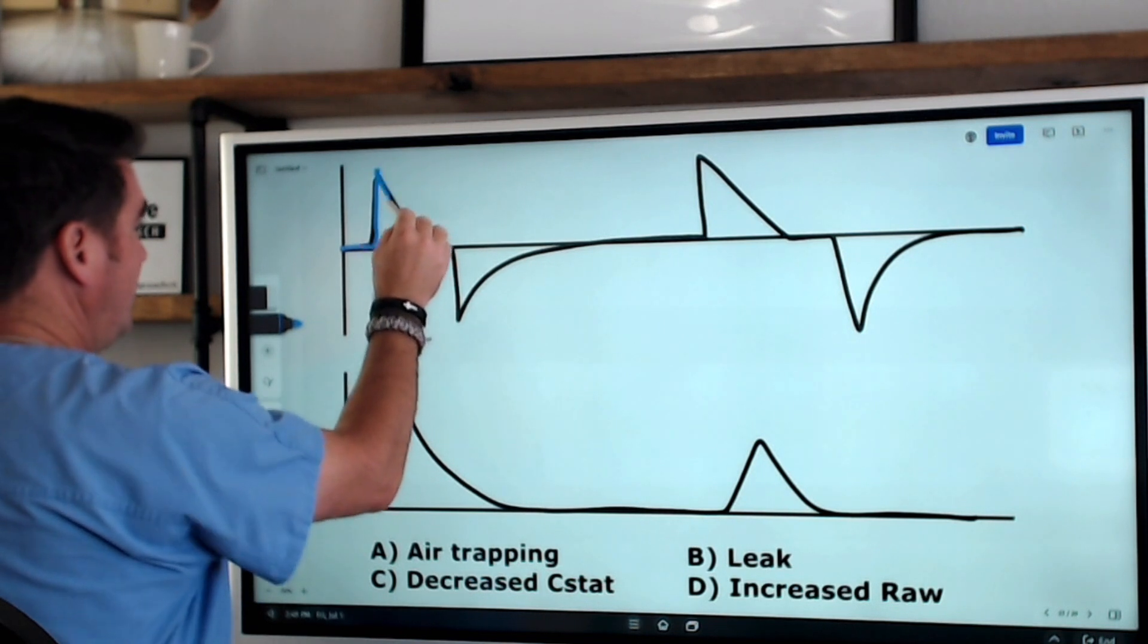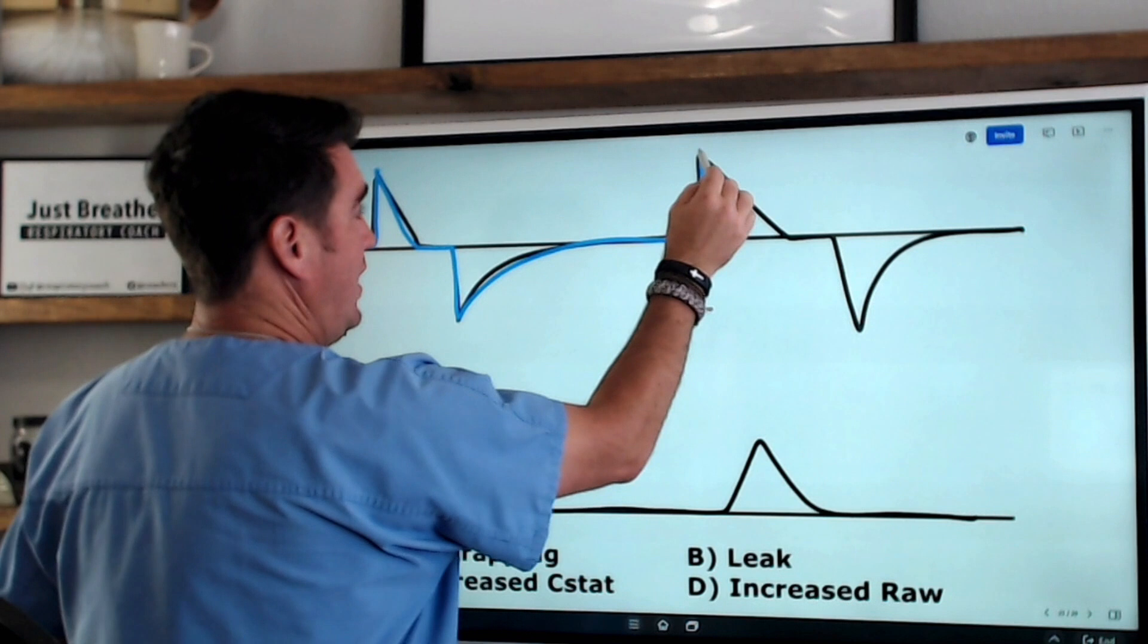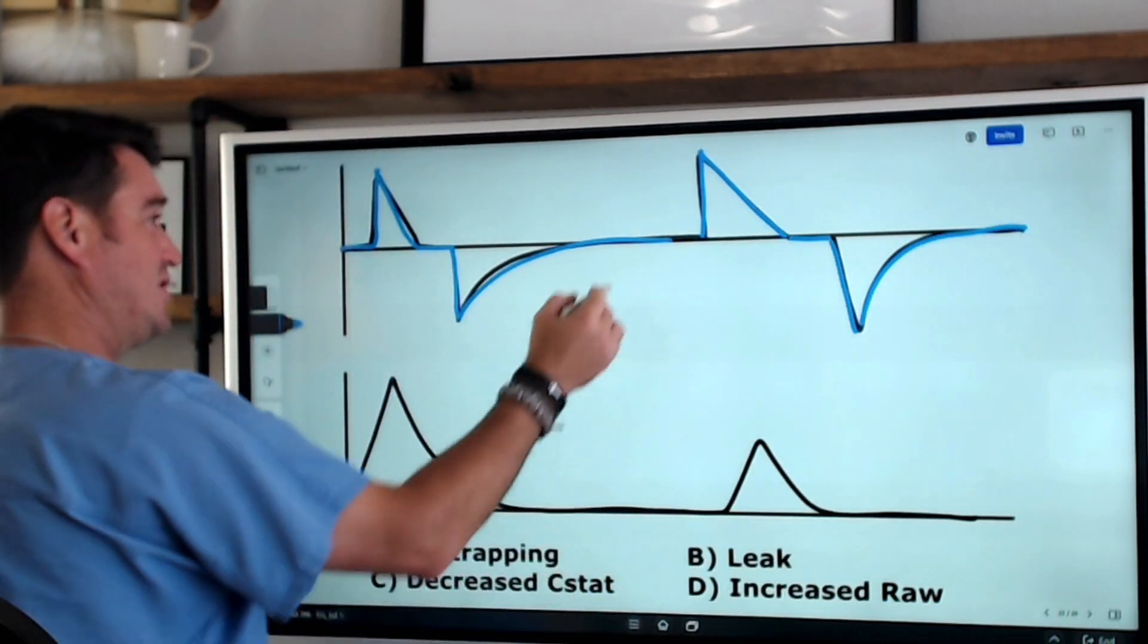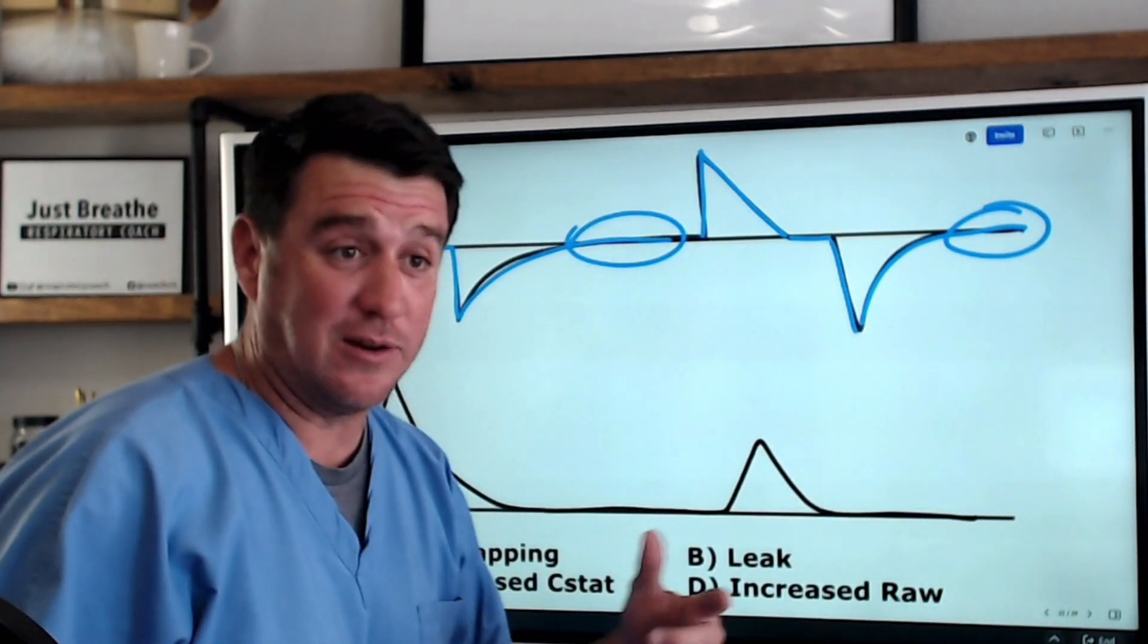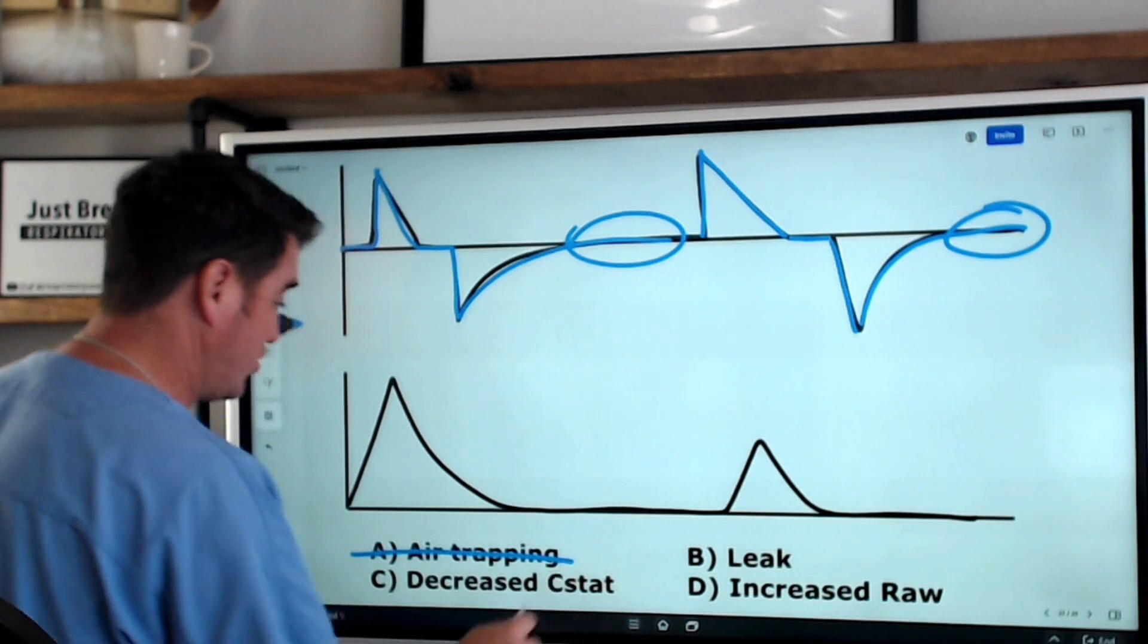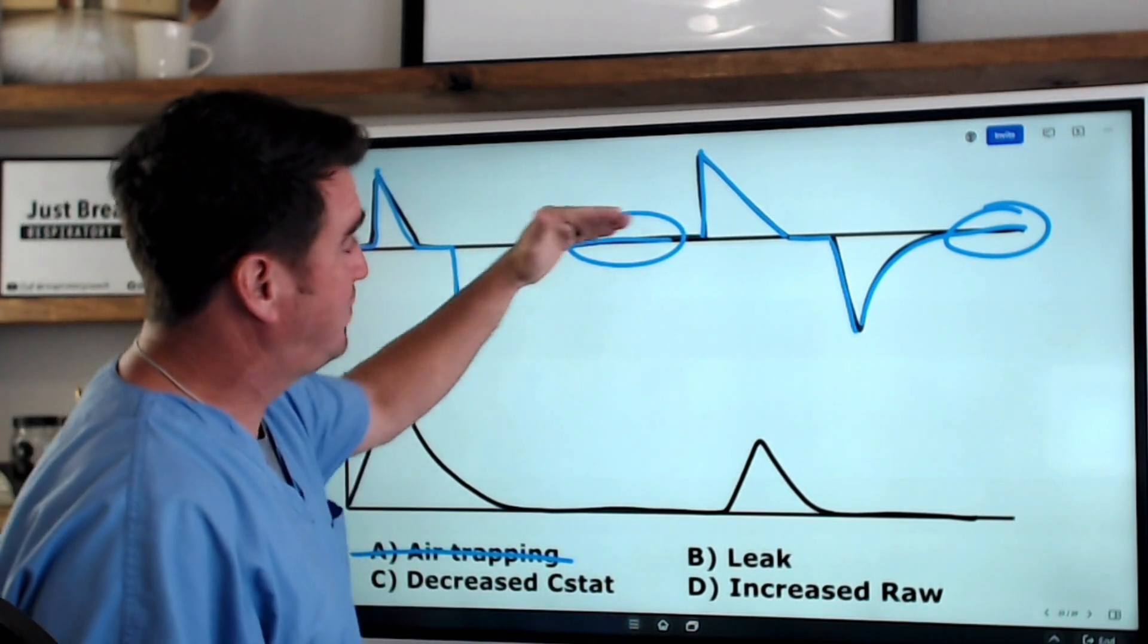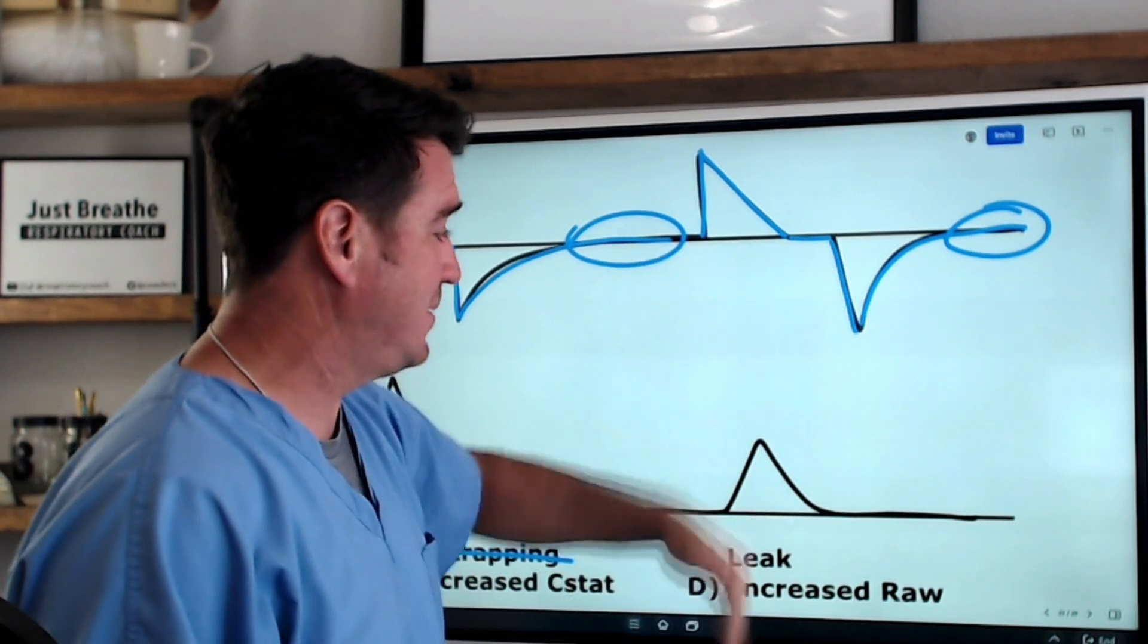Flow waveform, up, decelerates, back to baseline. Up, decelerates, back to baseline. Interesting, back to baseline, back to baseline. We can come down literally right now. Right now, we could come down and eliminate air trapping. Because the flow waveform comes back to baseline. That's all it does. It comes back to baseline.